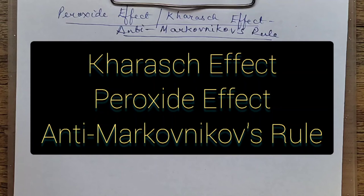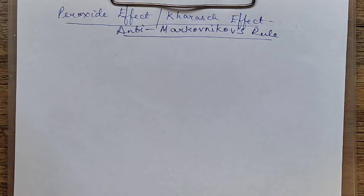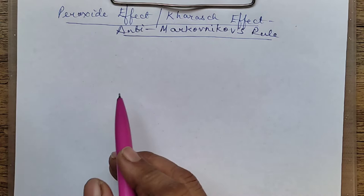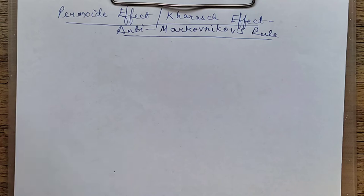Good morning children. We are on to the next lecture on alkenes, and in today's session I will be completing anti-Markovnikov's rule, that is also called as peroxide effect, Kharash effect. It is applicable only for addition of HBr to unsymmetrical alkenes.